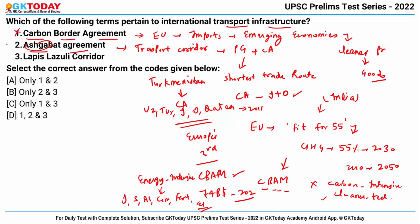The Ashgabat Agreement is correct as it pertains to international transport. The third term is the Lapis Lazuli Corridor — an international route that connects Afghanistan, Turkmenistan, Azerbaijan, Georgia and Turkey. This is also a transport route. So the correct answer is only two and three.